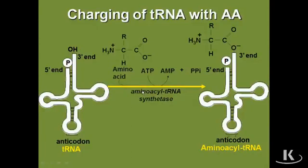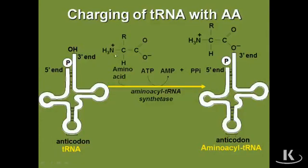It takes an amino acid and attaches it to a transfer RNA molecule. At the three prime end of tRNA initially, there's a free hydroxyl group, just like in any nucleic acid — a five prime phosphate and a three prime hydroxyl group. An incoming amino acid, which could be any amino acid — we just have an R group here — this amino group is going to react with the hydroxyl group, and in the end we get a covalent linkage of the transfer RNA with the amino acid.